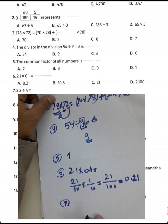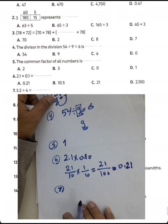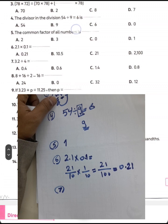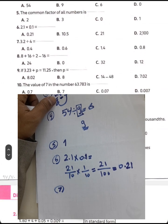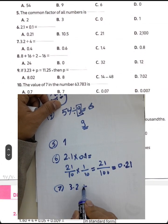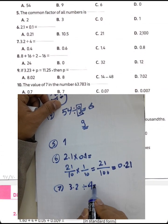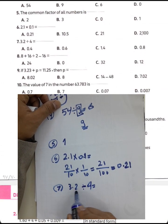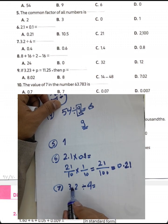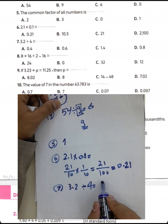Question 7: 3.2 divided by 4. Think of it as 32 divided by 4, which equals 8. Then place the decimal point one place in, so the result is 0.8, which is eight tenths.